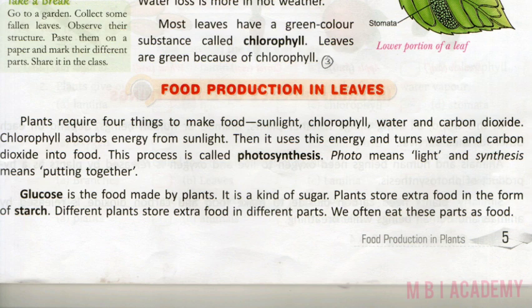Glucose is the food made by plants. It is a kind of sugar. Plants store extra food in the form of starch. Different plants store extra food in different parts, and we often eat these parts as food.